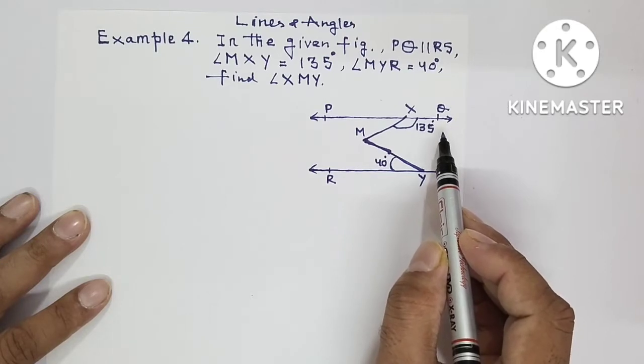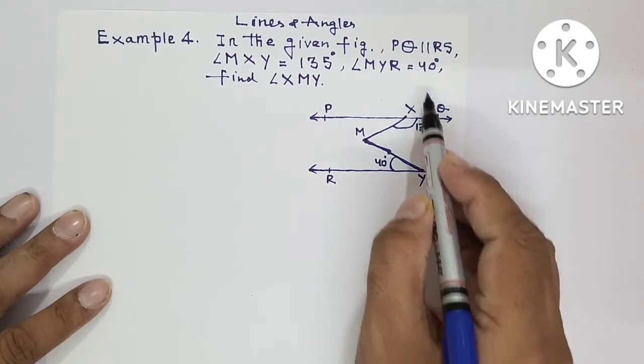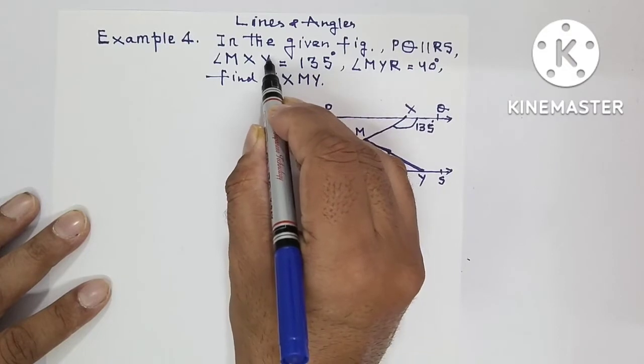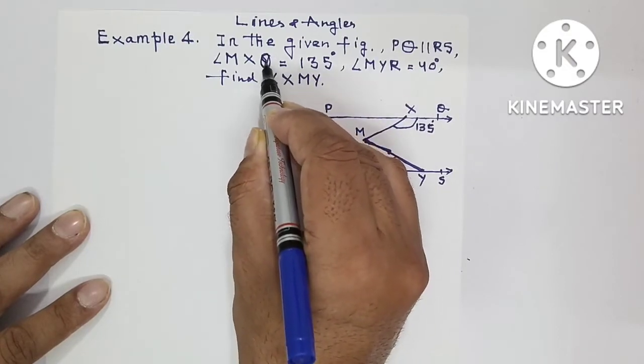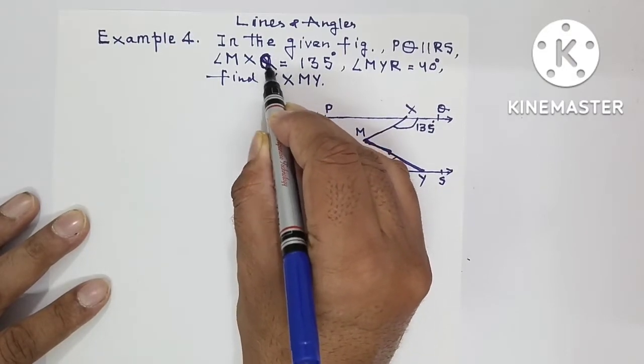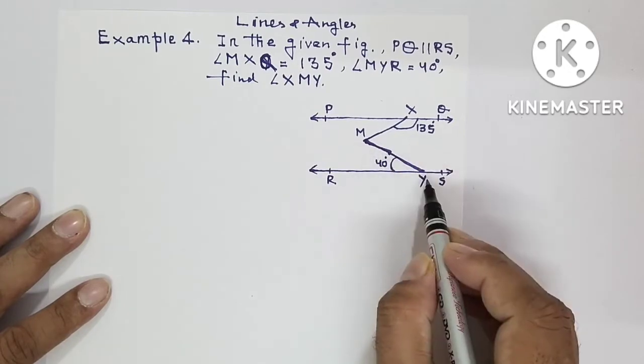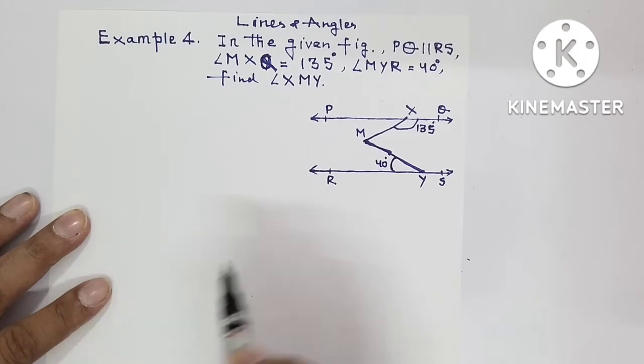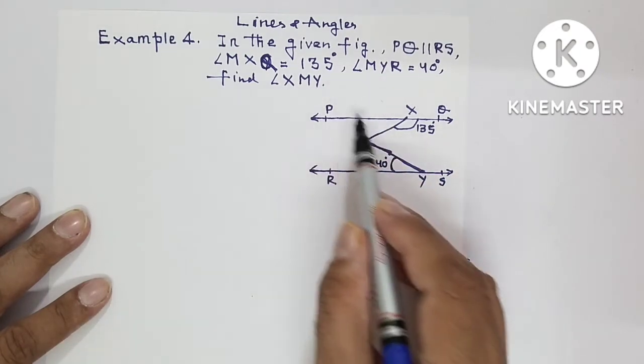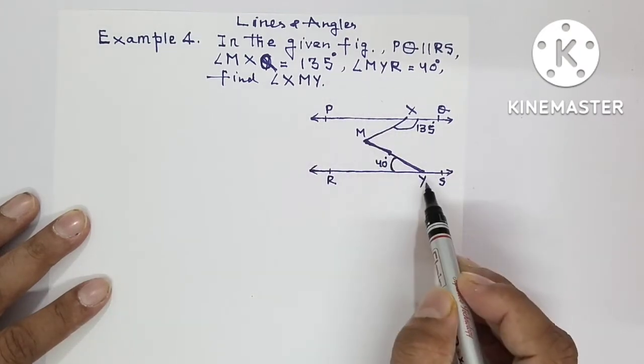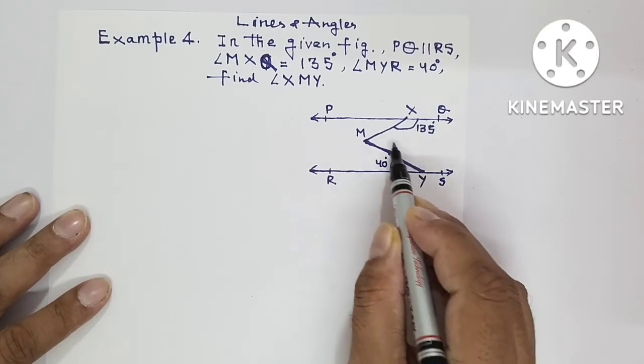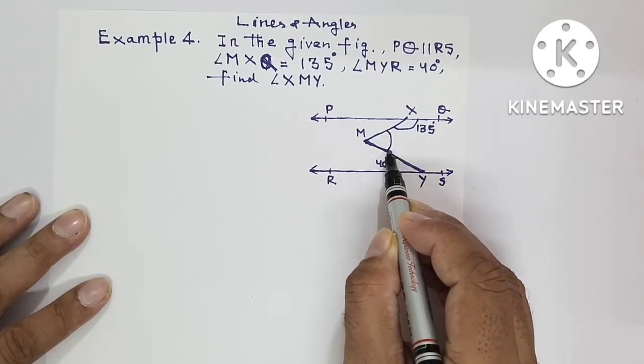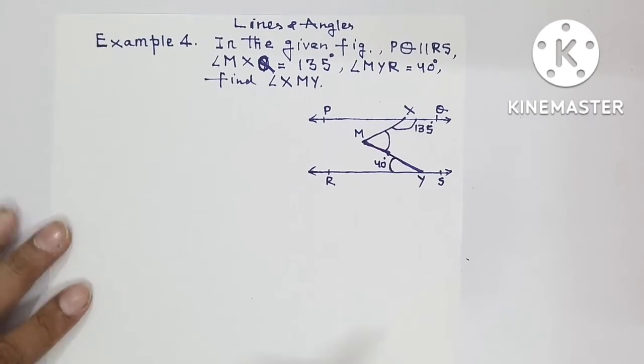It is angle MXQ equal to 135 degrees, and angle MYR is 40 degrees. So you need to find angle XMY - this angle is needed to be found.